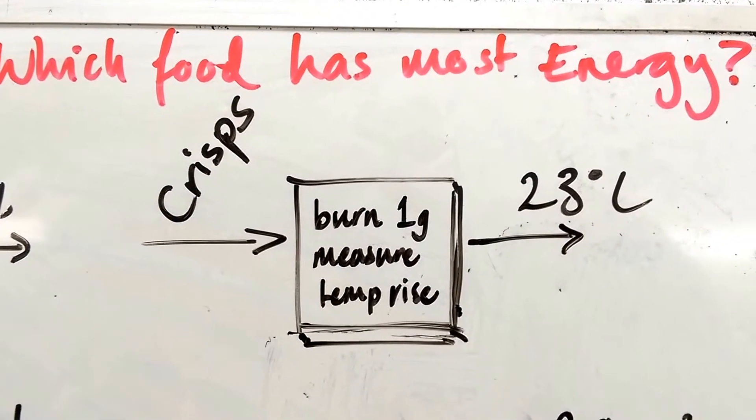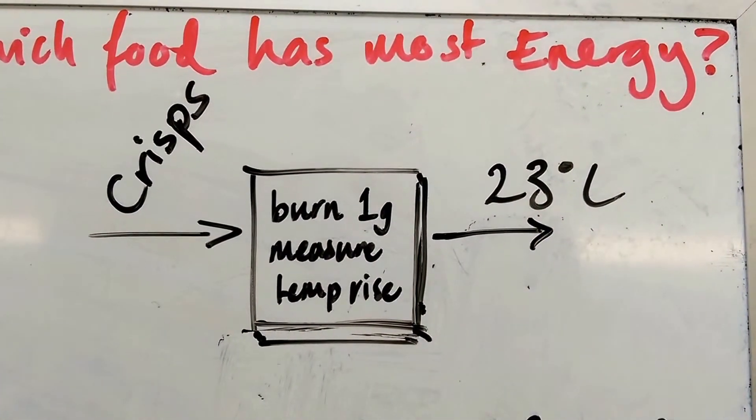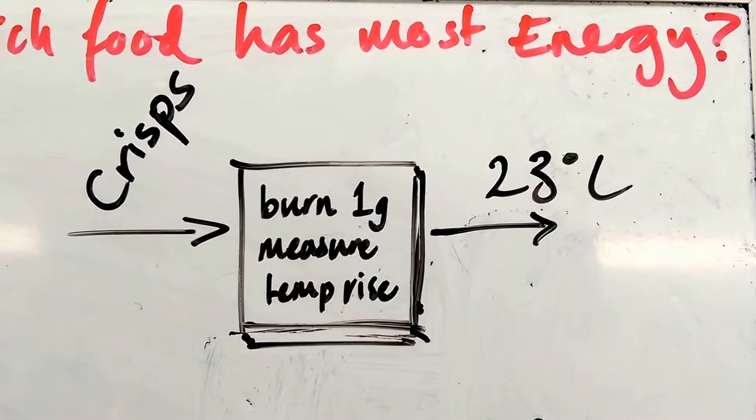Firstly, I'm going to put in crisps. I'm going to burn the crisps. Burn 1 gram of it. Measure the temperature rise. The thing I get out is 23 degrees temperature change.